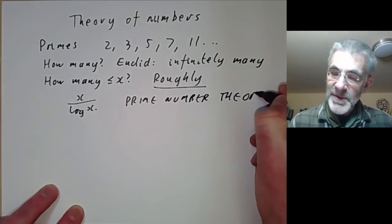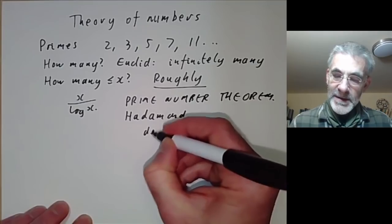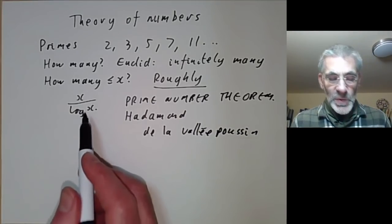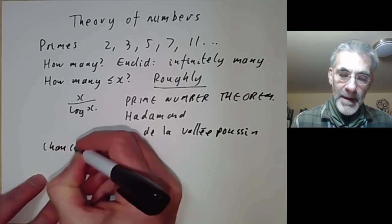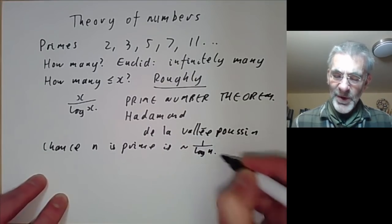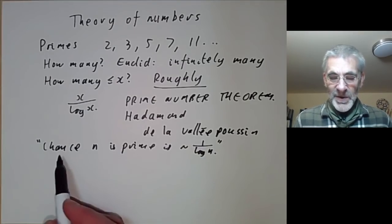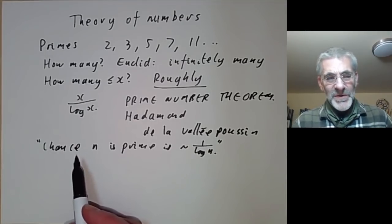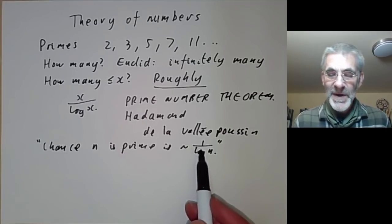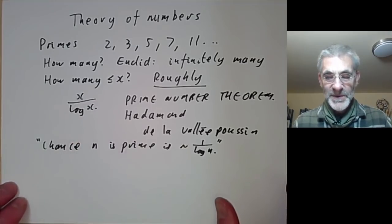The prime number theorem was possibly one of the biggest results proved in the 19th century. It was proved by Hadamard and de la Vallée-Poussin. Roughly speaking, it says the chance that some large number n is prime is about 1 over log n. Of course, that's somewhat informal — a large number either is prime or it isn't. What it really means is that among numbers from 1 to x, the fraction that are prime is about 1 over log x.